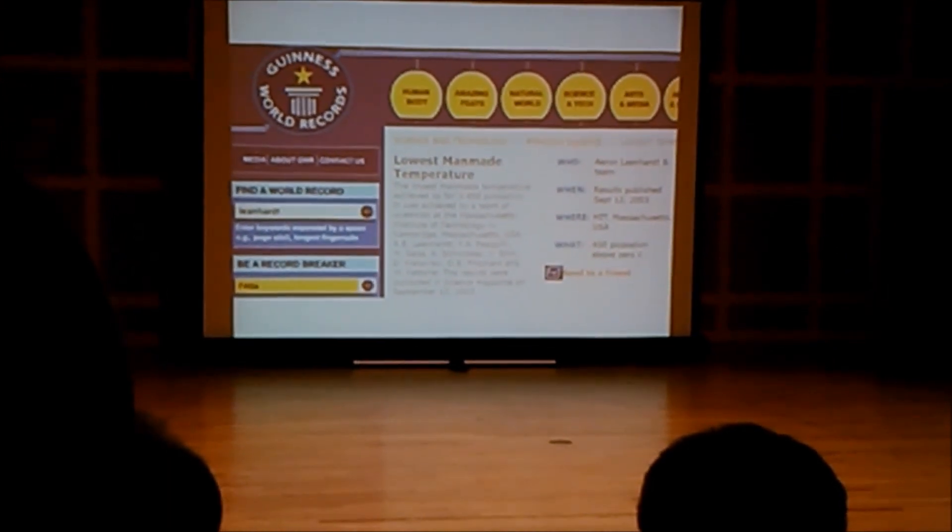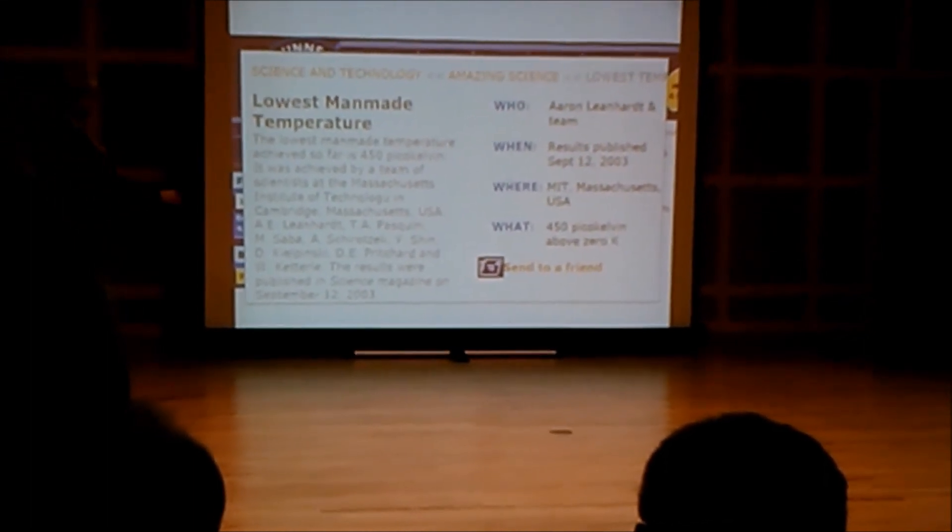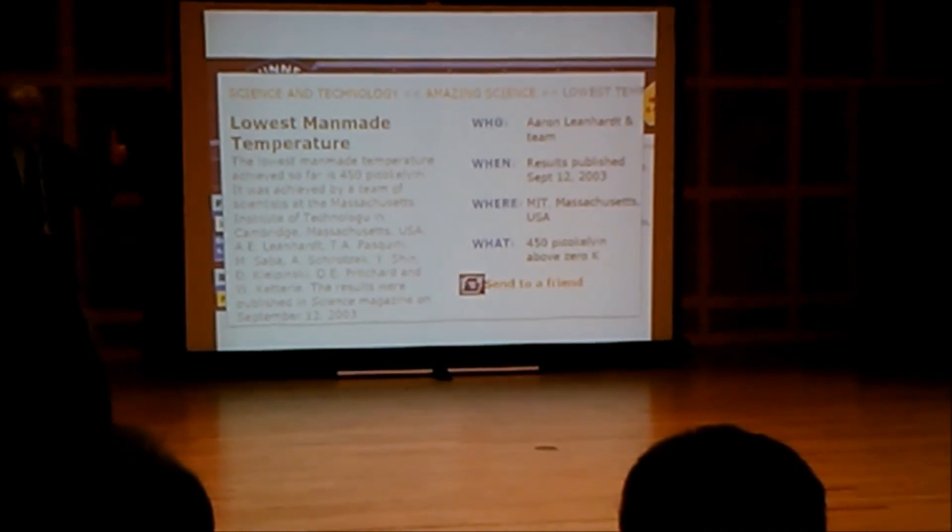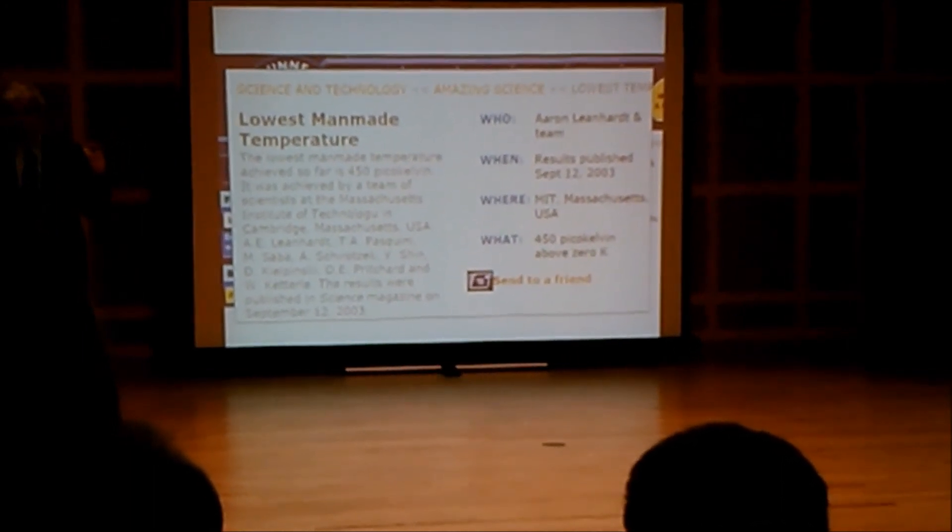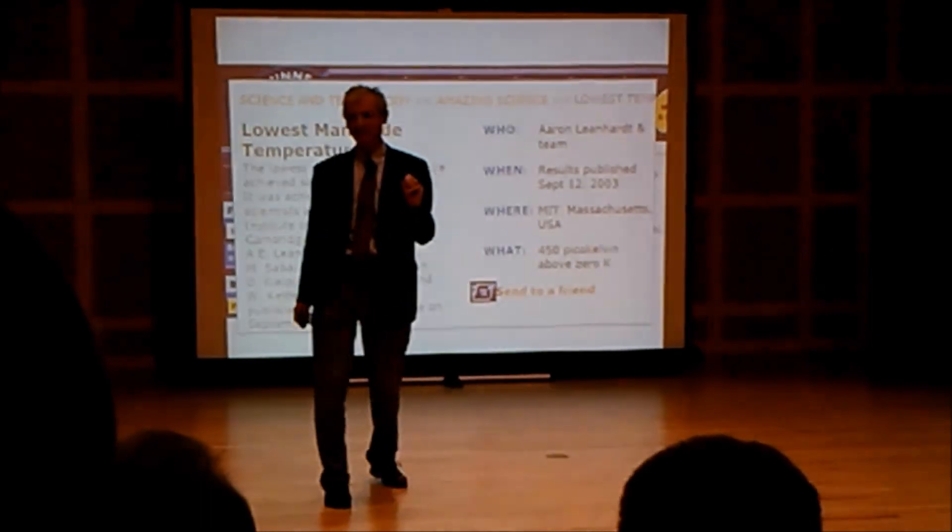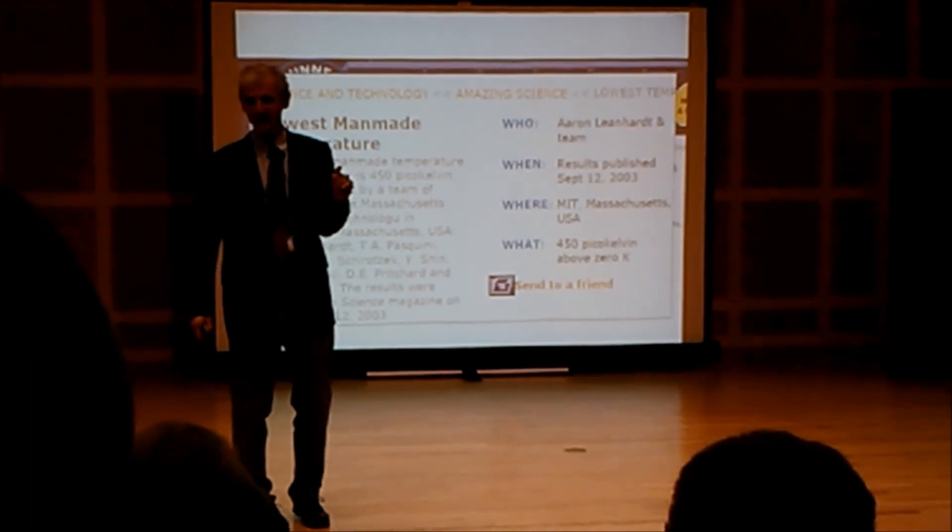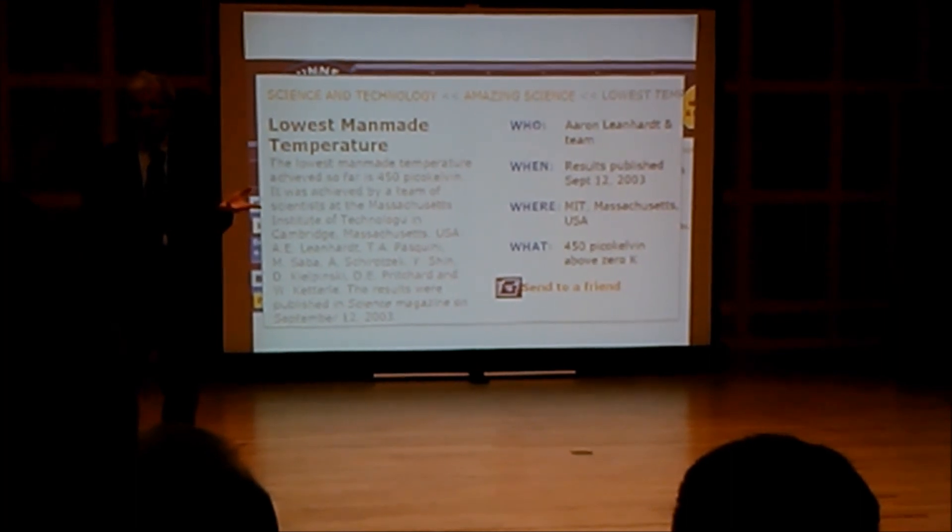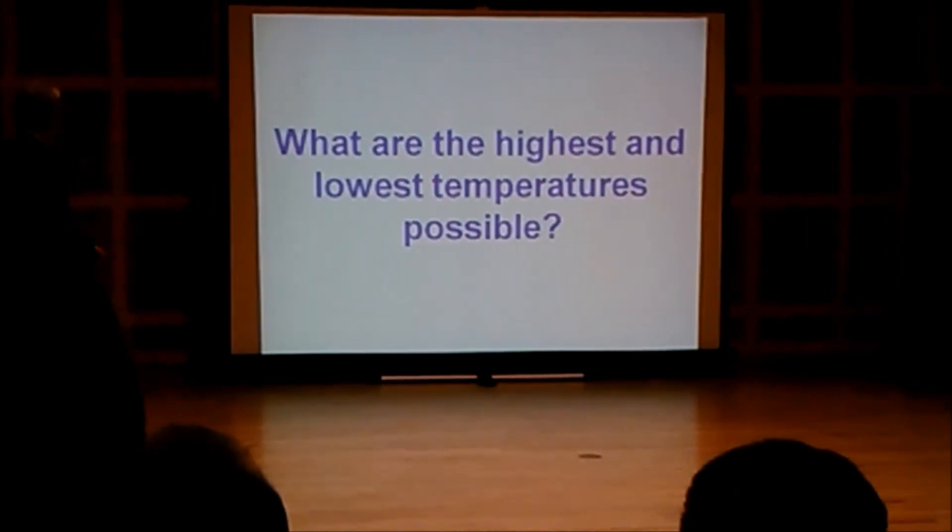How low a temperature can we reach? Well, we usually do not publish in the Guinness Book of Records, but they picked up one example of our research, where we were able to cool for the first time a gas below one nanokelvin, less than one billionth of a degree away from absolute zero. I should actually say, when we published this research and the Guinness Book of Records picked it up, it was nice for the students, because they could tell their parents, hey, look at the Guinness Book of Records, this is what I have done. Because often parents cannot read the scientific publications, but that was something they could relate to.